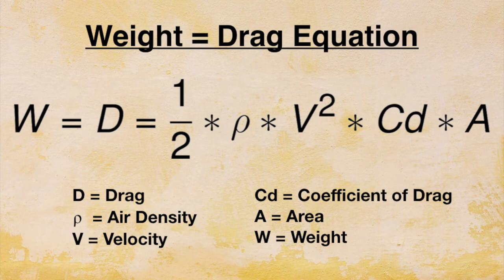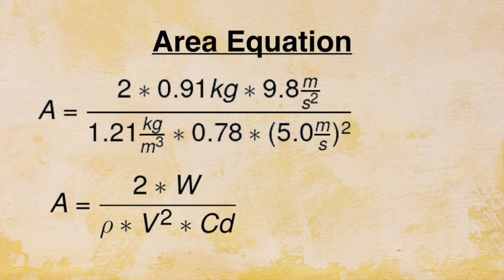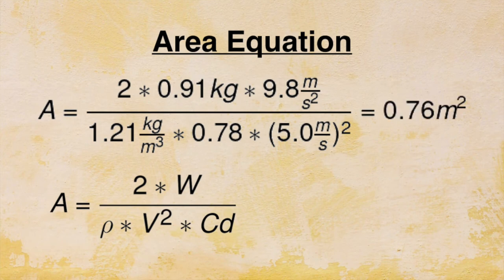Rearranging the drag equals weight equation, we can calculate the required diameter by first calculating the area. Area equals 2 times weight over air density times velocity squared times drag coefficient. Using an estimated weight with a flat circular parachute — mass equals 0.91 kilograms, which is around 2 pounds — gravity equals 9.8 meters per second squared, air density equals 1.21 kilograms per meter cubed, drag coefficient equals 0.78, and target terminal velocity equals 5.0 meters per second, we find that area equals 0.76 meters squared.